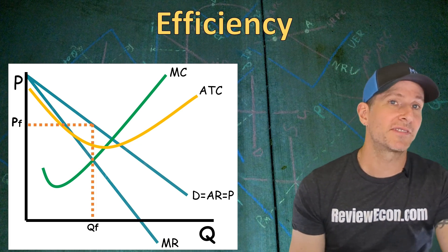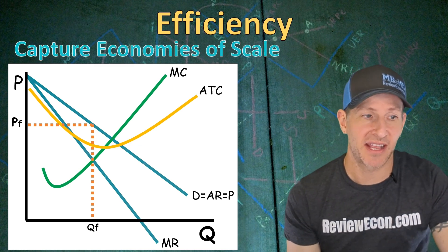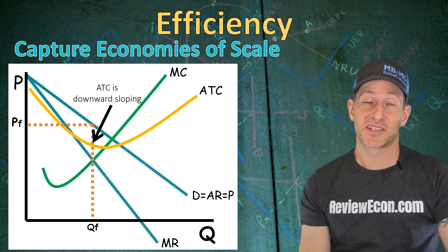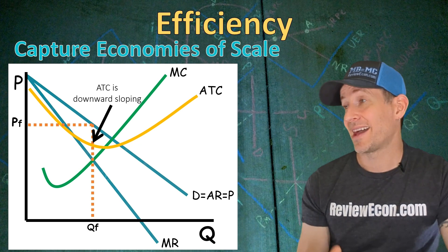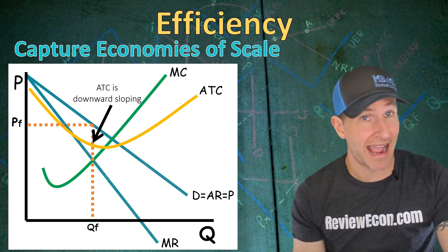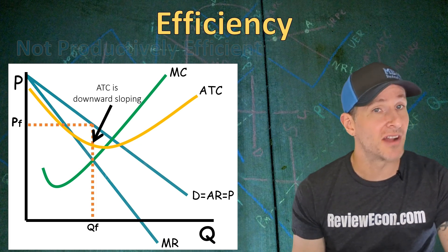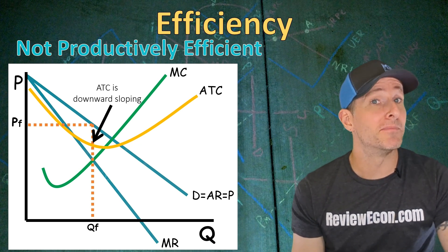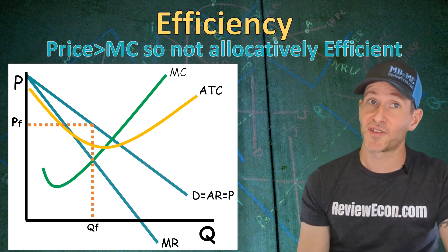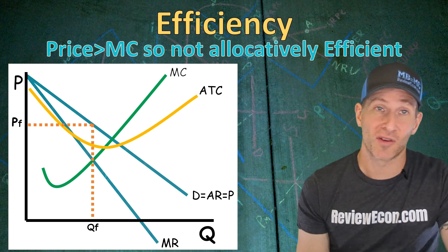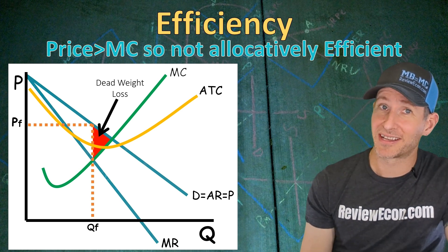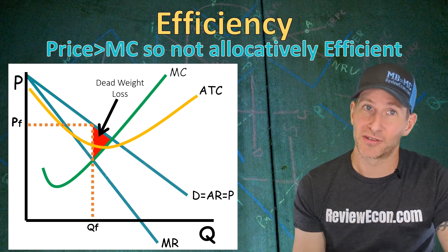Next we're going to talk about efficiency when it comes to monopolies. One thing monopolies often have going for them is that they capture economies of scale, because at the profit-maximizing quantity the average total cost curve is downward sloping. Since monopolies are always in the long run thanks to high barriers to entry, that average total cost curve is the long run average total cost curve. But since it's still downward sloping at the profit-maximizing quantity, this firm is not going to be productively efficient. Productive efficiency is found at the minimum of the average total cost curve — the quantity where the ATC curve intersects the marginal cost curve. Also, since this firm's price is greater than marginal cost, this firm is not going to be allocatively efficient. As a result, they will have a triangle of deadweight loss, and we could calculate the amount of deadweight loss by calculating the area of that triangle if there were numbers.